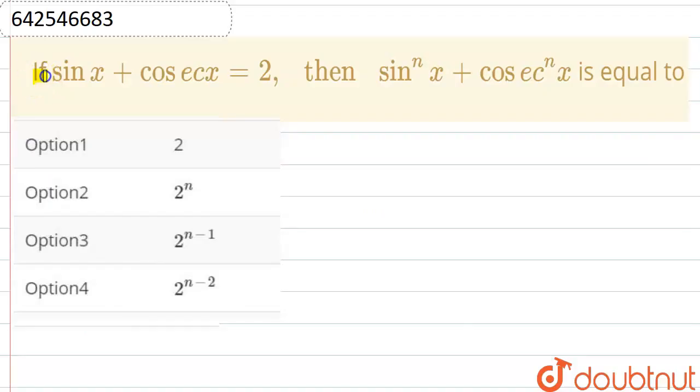In this question, we are given if sin x plus cosec x is equal to 2, then we have to find sin raised to the power n x plus cosec raised to the power n x is equal to what. Let's write what is given in the question: sin x plus cosec x equals 2.